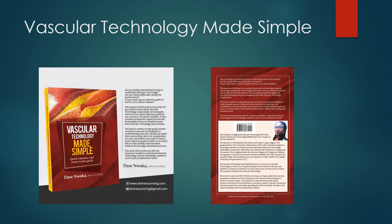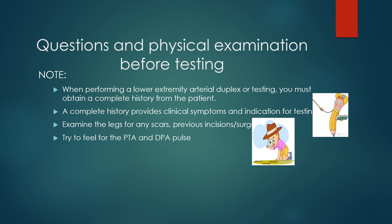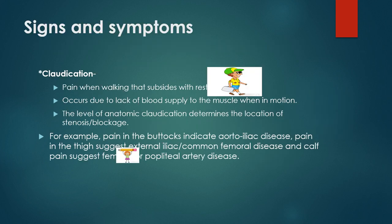When performing a lower extremity arterial disease evaluation, you want to obtain questions from the patient. When performing a lower extremity arterial duplex, you must obtain a complete history. A complete history provides clinical symptoms and indication for the testing. Examine the legs for any scars, previous incisions, or surgeries, and try to feel for the posterior tibial artery and the dorsalis pedis pulses — that gives you a general idea of what is going on in the leg.